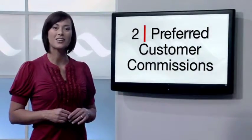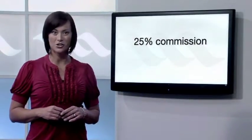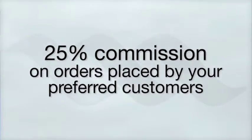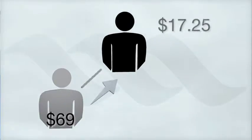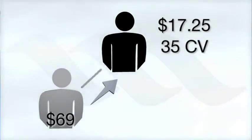As an Active Associate, you earn 25% commission on every order placed by your personally enrolled preferred customers, people who sign up to receive the product every month on AutoShip. If your customer buys a product for $69 US dollars, you receive $17.25 plus 35 CV per product.